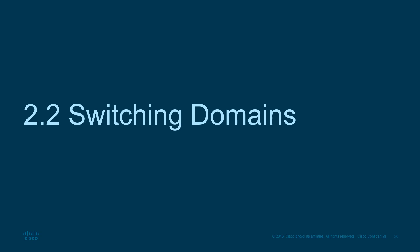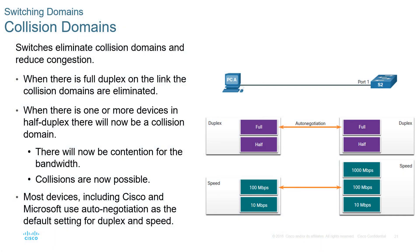There are two primary switching domains: a collision domain and a broadcast domain. Collision domains were common with hubs, but with switching we no longer have collision domains — switching eliminated them and helped reduce congestion. When there is full duplex on a link, collision domains are completely eliminated; with half duplex, there may still be a collision. A collision is where two signals are on the same wire and hit each other, disrupting communication. Hubs would receive a frame and forward it out all ports, constantly sending data even to unneeded ports, which caused collisions. Switching no longer has those issues.